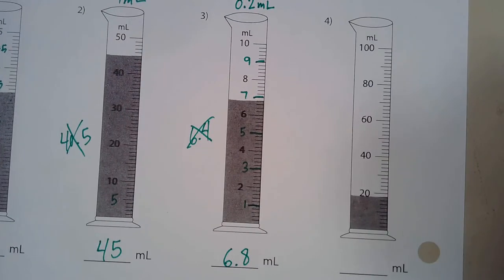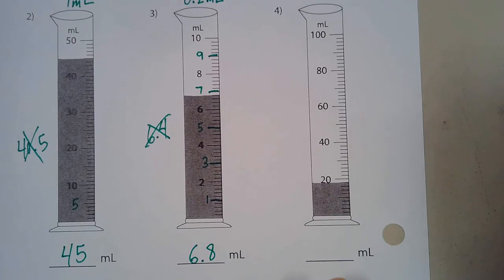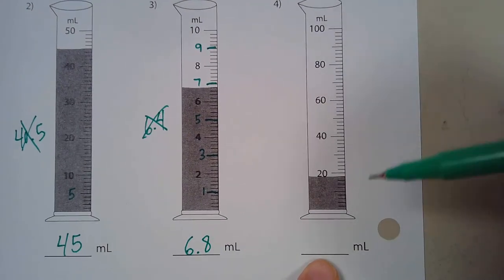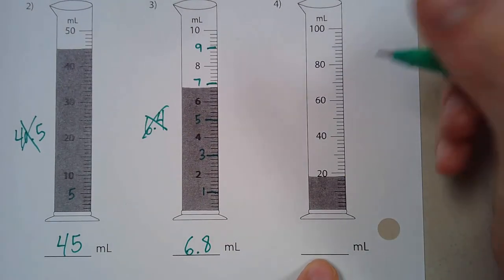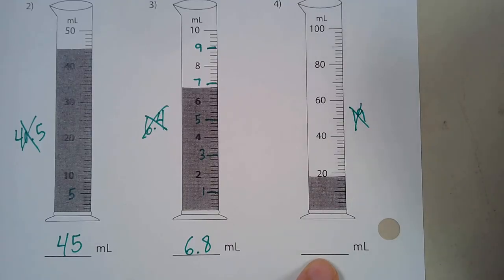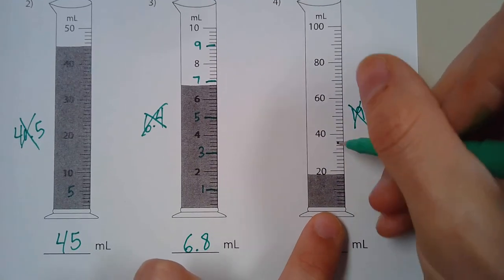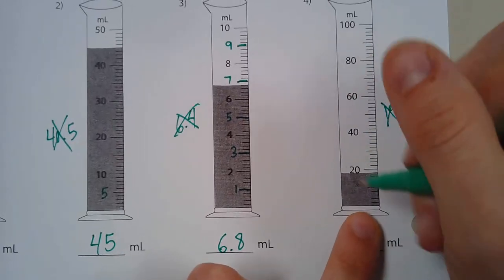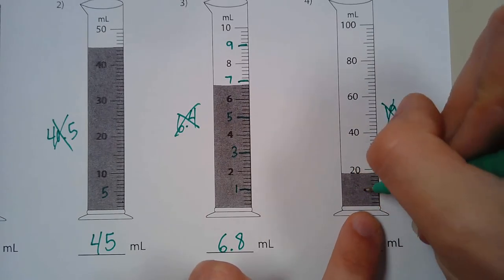Now I'll do one more example for you guys. This one. I have some students that look at this and they say, well, it's just one line below 20, so it must be 19. But it's not 19. So same thing as the other ones, figure out what our scale is. So here between 0 and 20 would be 10. And we have five lines between 0 and 10.